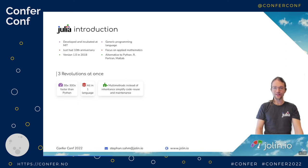In Python or other languages you use inheritance for code reuse and composability. But in Julia we have multi-methods, which are far more intuitive. I'm going to present them in a second.